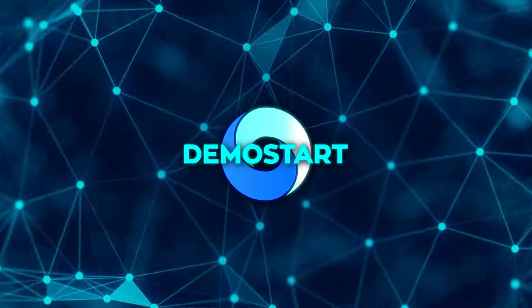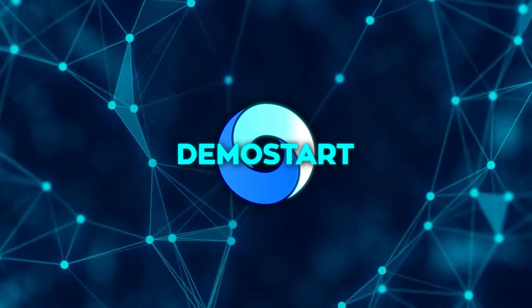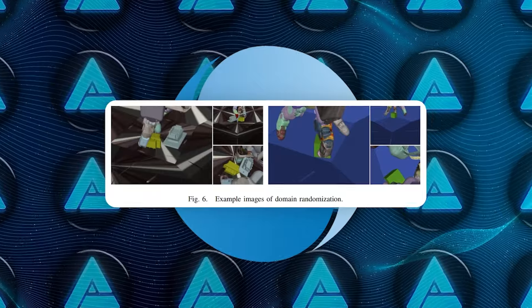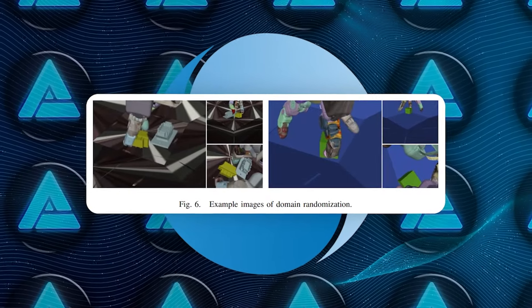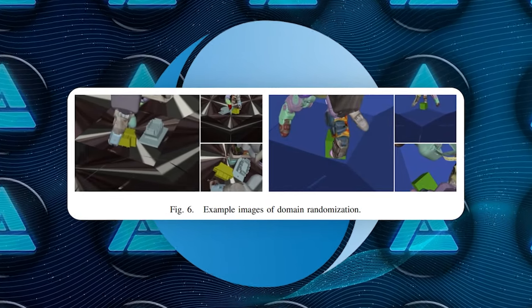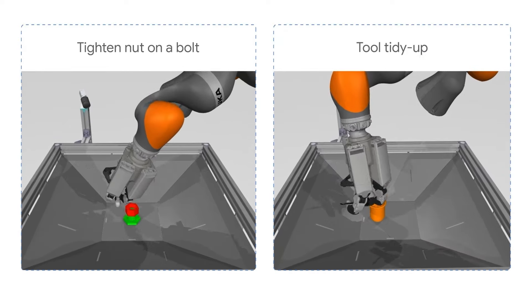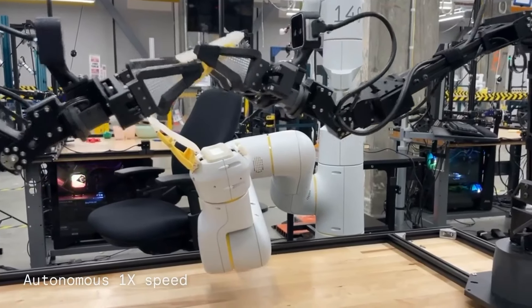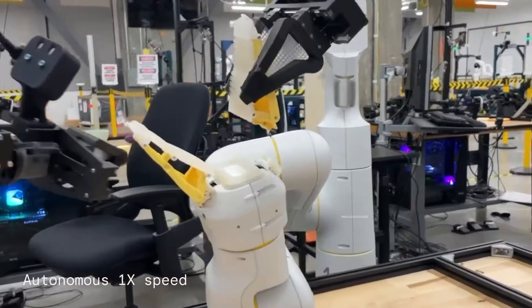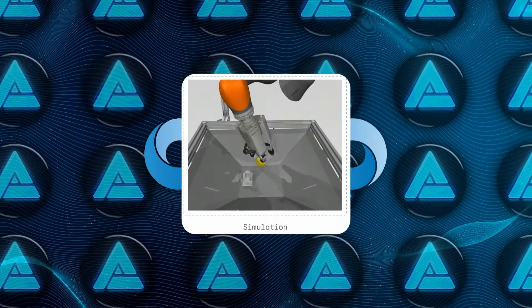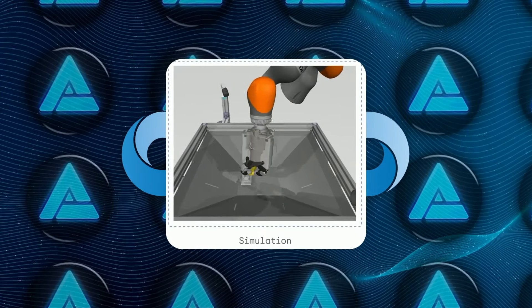To make these simulations as realistic as possible, Demostart relies on domain randomization. This technique introduces variations in the training environment, such as changing the lighting, object positions, and even physical properties like friction. By exposing the robot to a wide range of potential scenarios in simulation, it becomes much better at handling real-world variations. For example, a robot trained to insert a plug into a socket will encounter different types of plugs, sockets, and angles in simulation, making it more adaptable when it encounters these variations in real life.